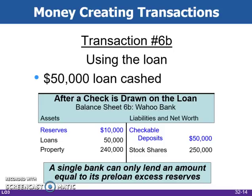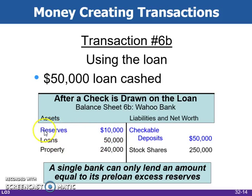In transaction number six-b, the customer with the loan is going to spend the money — that was the purpose of taking out the loan. They write a check, which comes out of our bank. The $50,000 goes back out of the checkable deposits and into another bank. The other bank's reserves would have increased, while our bank decreases by the amount of the check. Checkable deposits decrease by $50,000, which also decreases our reserves. The loan is still owed to the bank, so that line item remains untouched — instead, the $50,000 comes out of reserves. They still have to keep 20% of $50,000 on hand in their reserves.